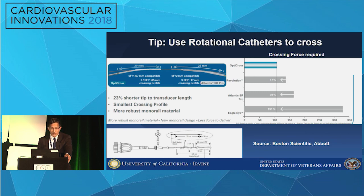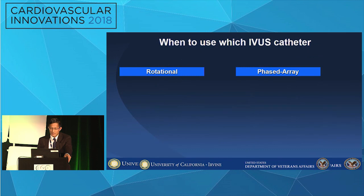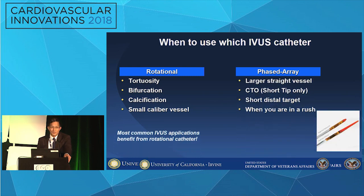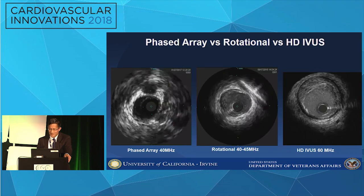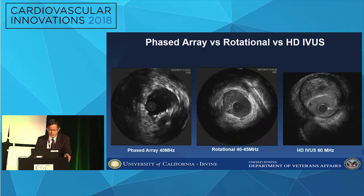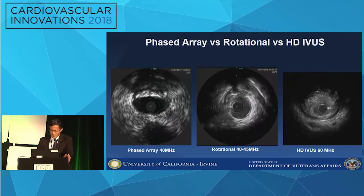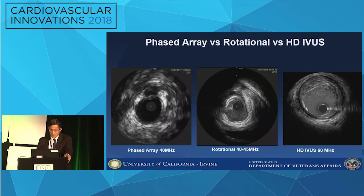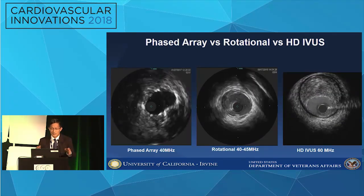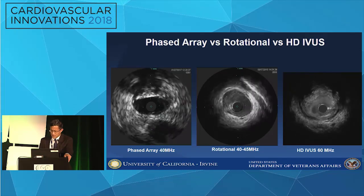My tip is to use rotational catheters to cross any kind of tortuosity, calcium, or difficult lesion. The Revo catheter has a much easier crossing force compared to the Eagle Eye, and Boston Scientific's Opticross 5 French compatible catheter is also much easier to cross than a phased array catheter. OCT has the exact same crossing profile as the Opticross. When do you use which IVUS catheter? Use rotational any time you see tortuosity, bifurcation, going through a stent strut, calcification, or a small caliber vessel. The phased array catheter is good for larger straight vessels, CTOs when you need a short tip, a short distal target, or whenever you're in a rush. The most common IVUS applications would benefit from a rotational catheter — this is a revelation I learned only a few years into practice.